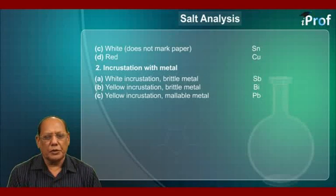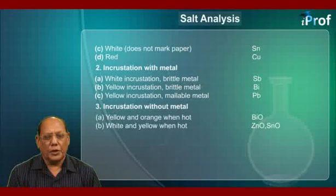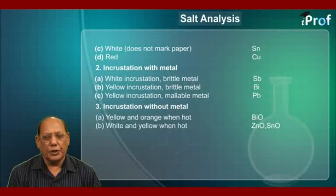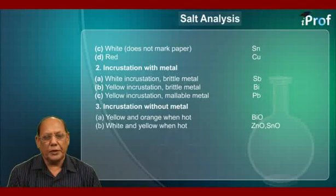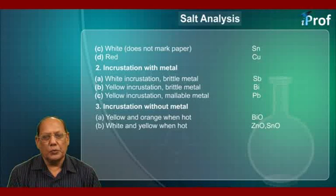Number 3: Incrustation without metal. A. Yellow and orange when hot — indicates ZnO. B. White and yellow when hot — may be ZnO or SnO.